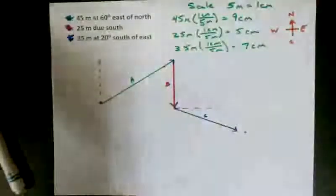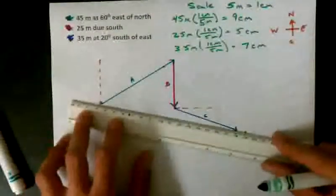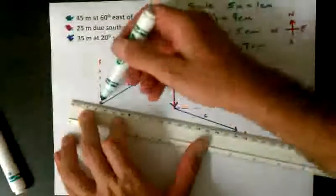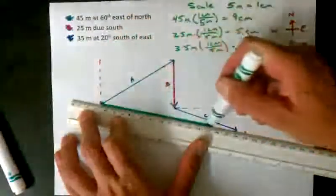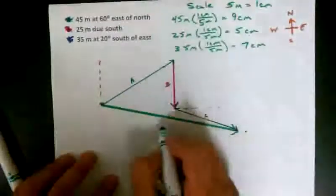Now my resultant goes from where I started all the way down to where I ended. So make sure you use a ruler to get a straight line, and I'm going to label it R for resultant.